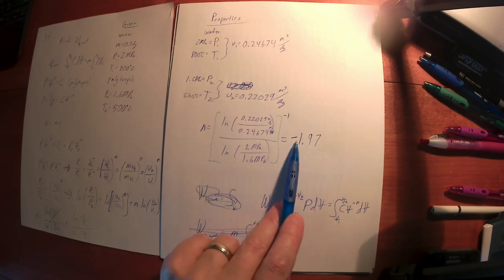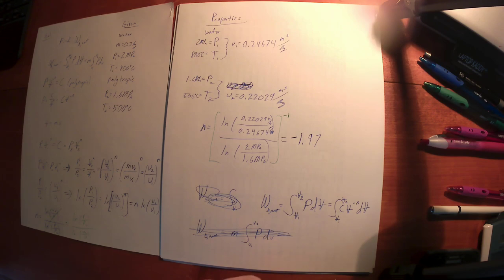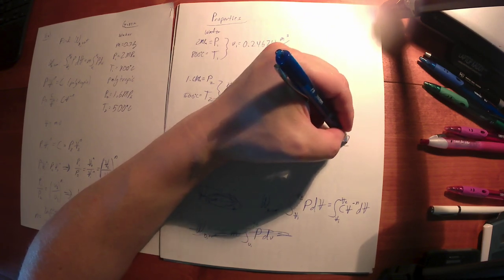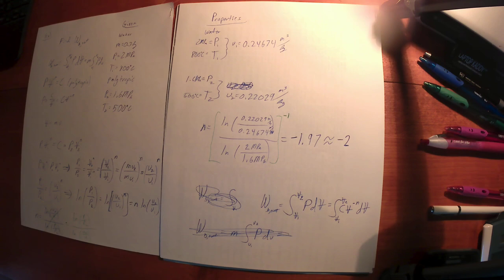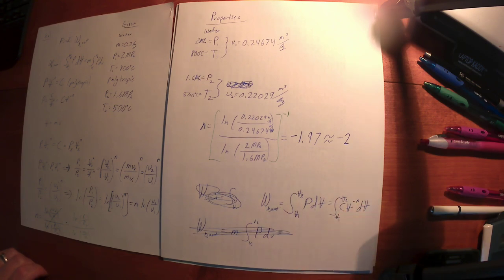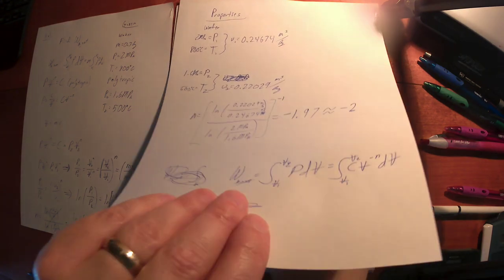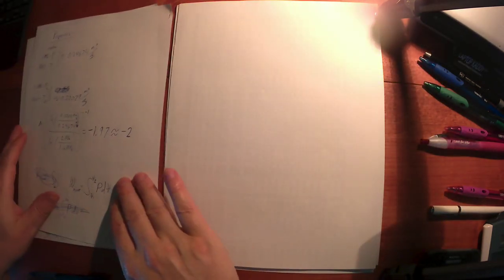So I'm going to integrate, so the constant is going to come out. I'm going to integrate V to this power n. Well, so it's going to be minus a negative 1.97. What I might suggest to you, if you guys are okay with it, let's make this a little easier on ourselves. Let's say this is about minus 2. Let's just say it's about minus 2 if you guys are okay with that. Let's call it minus 2.